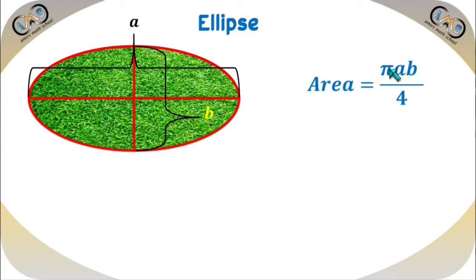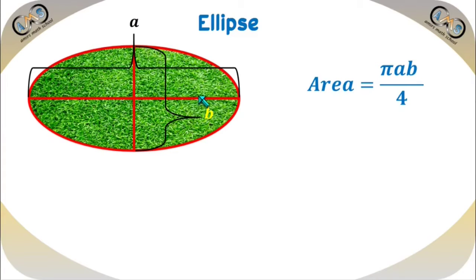We know pi is an irrational number — the decimal places after the decimal point will never finish. We just apply the approximate value, that is 3.14159. So the area is pi AB divided by 4, where this length is A and this length is B. The result is in square units.